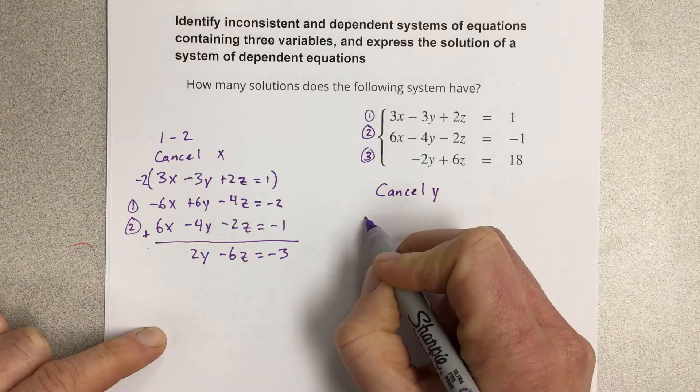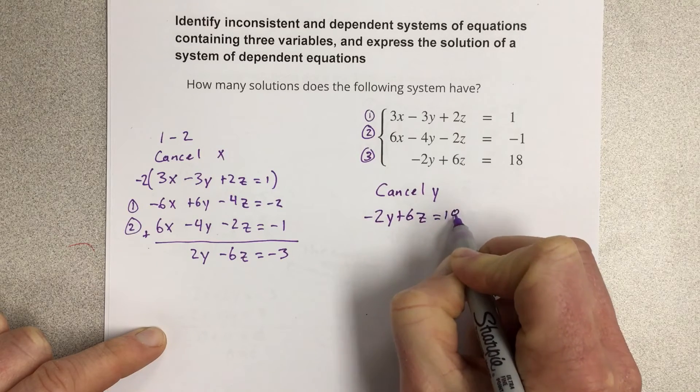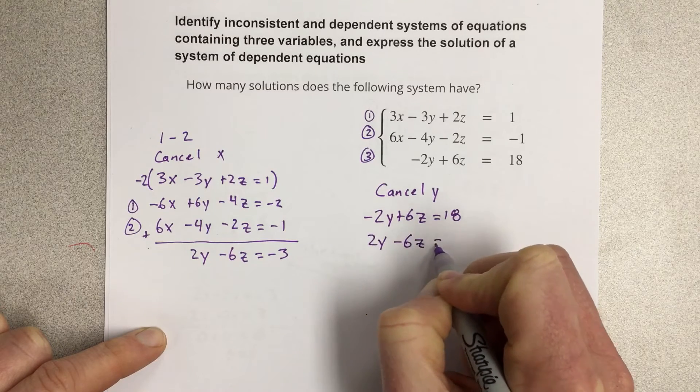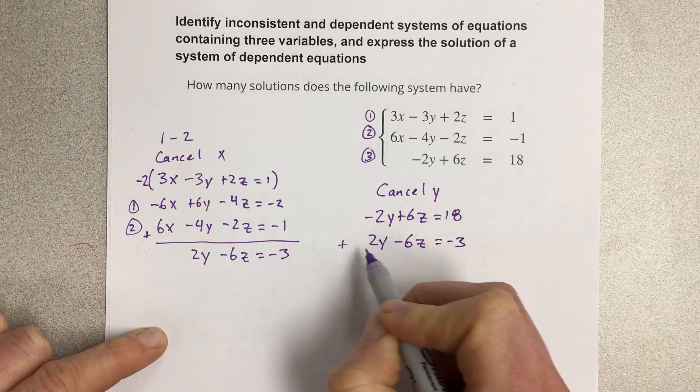So to cancel y, I'll have negative 2y plus 6z equals 18 and this would be 2y minus 6z equals negative 3. We're going to add these equations together.